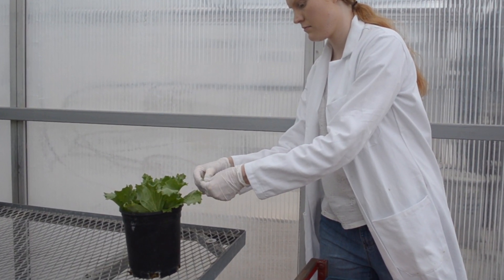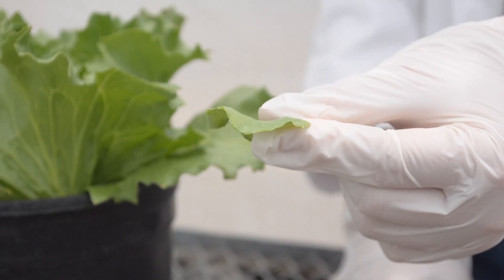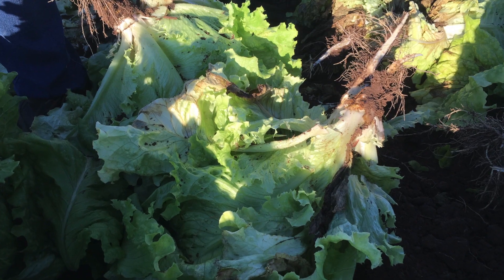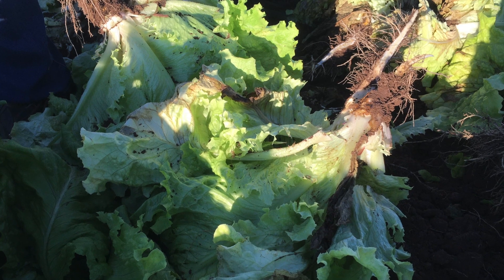First, we take about 0.2 grams of our sample. It can be a leaf or a root. If it's a root, get the main part, not the stringy secondary roots.